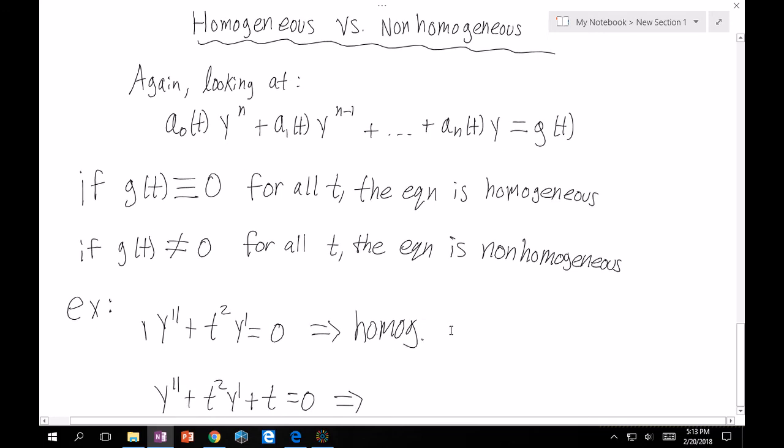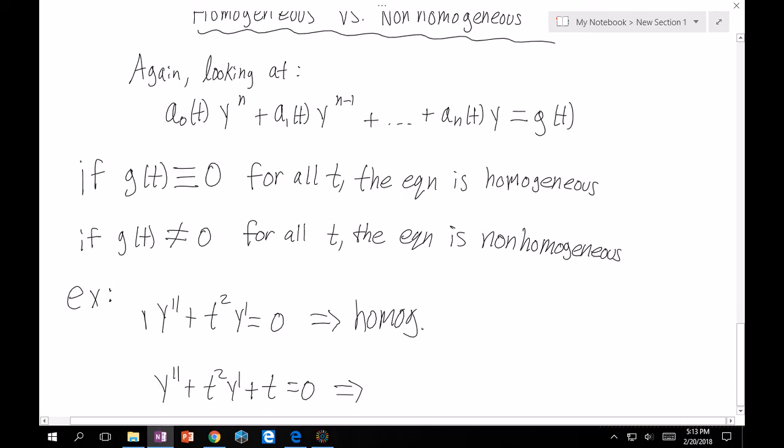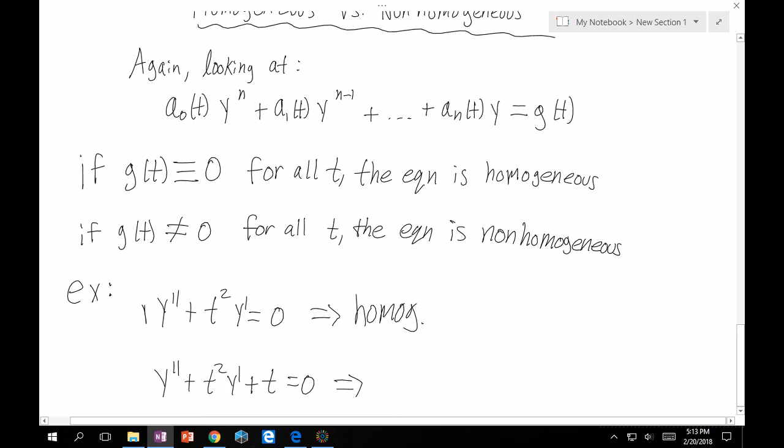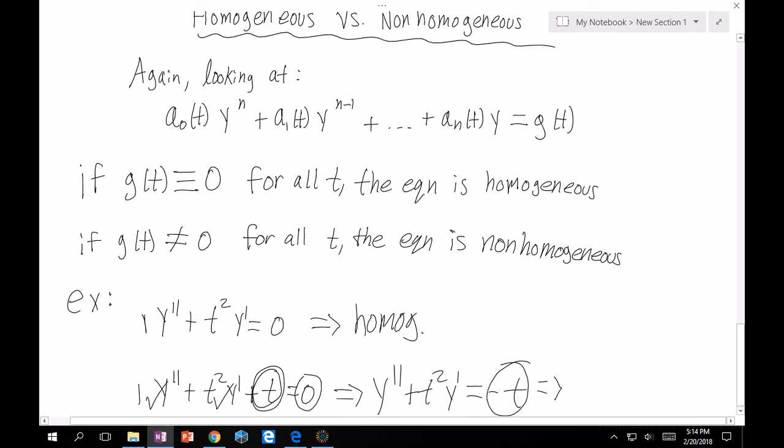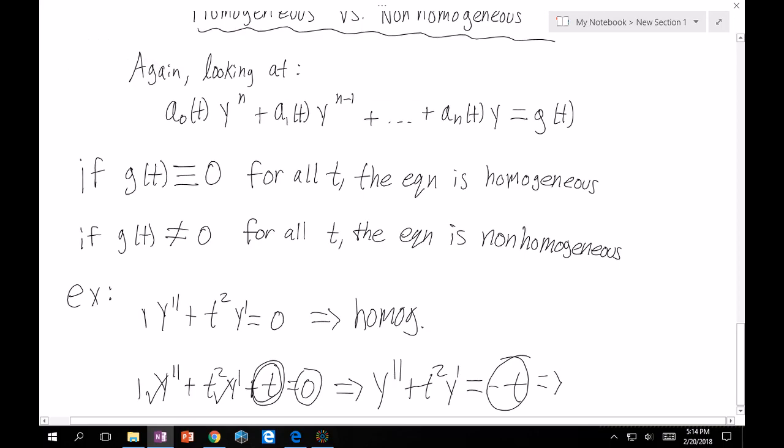The second example, and this is a classic mistake, which is why I wrote this, is we have our implied 1 again in front of y double prime. So that's fine. t² y prime, that's also fine. And many students will look at this and be like, oh, this is a 0 right here, this must be homogeneous. But look at this term. We have a t on the left-hand side that's not attached to a y, it's not attached to anything. So really, we could write this equation as y'' plus t² y' equals minus t. At that point, it's very clear that because of this term, this is non-homogeneous.